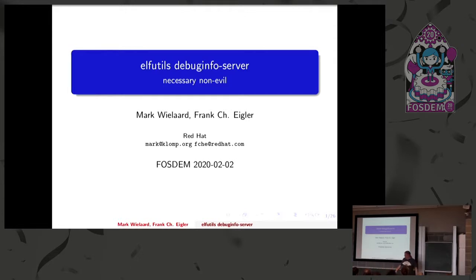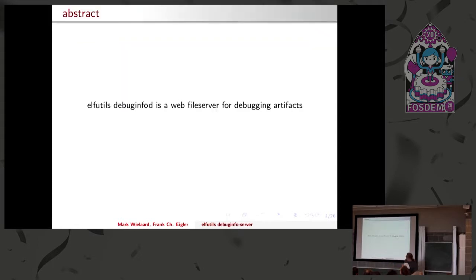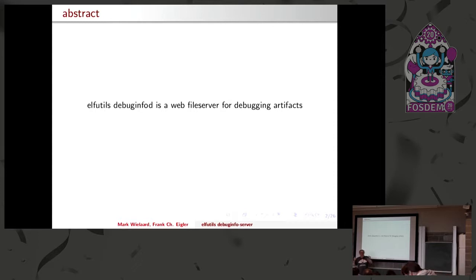We all three work for Red Hat, but the goal was very explicitly not to make something just for RHEL or Fedora. The summary is: we have a debuginfod daemon. We realized too late it should have been 'dwarfd-daemon', of course, but now we're stuck with the name. It's essentially just a file server for debugging artifacts.